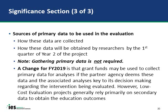In the Significance section, you will also describe sources of primary data to be used, how these data are collected, and how they will be obtained by the researchers by the first quarter of year two. Note that gathering primary data is not required. The FY 2019 change allows grant funds to be used to collect primary data if the partner agency deems these analyses key to its decision-making, though low-cost evaluation projects generally rely primarily on secondary data.